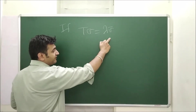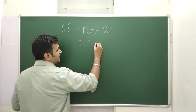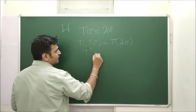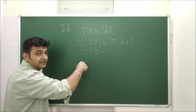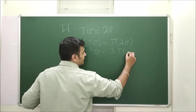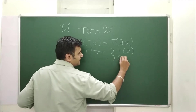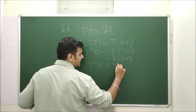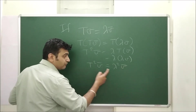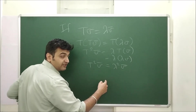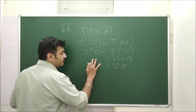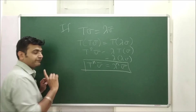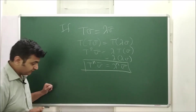First, one key fact: if Tv = λv, apply T on both sides to get T²v = T(λv) = λ·T(v) = λ·λv = λ²v. Apply T again and T³v = λ³v. One can prove by induction that T^n · v = λ^n · v. That's the fact we'll use.